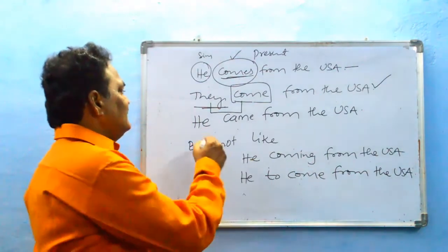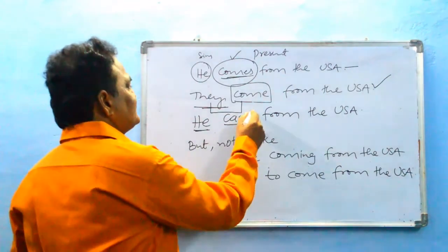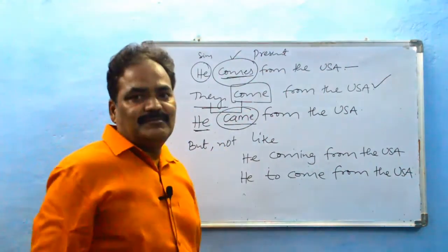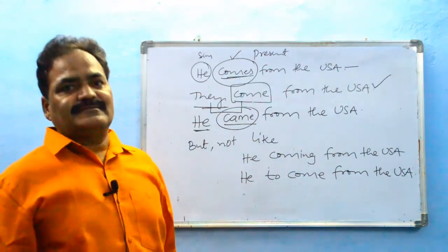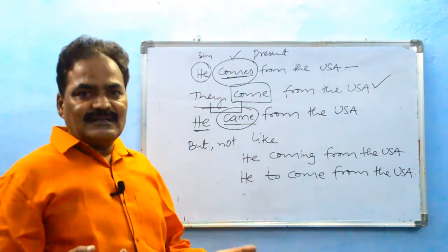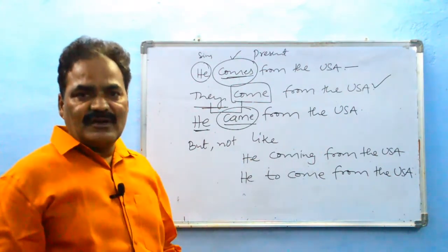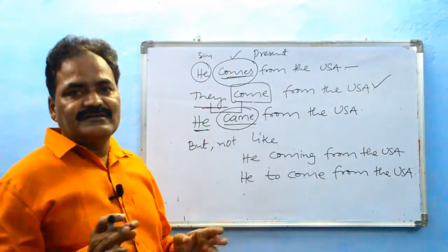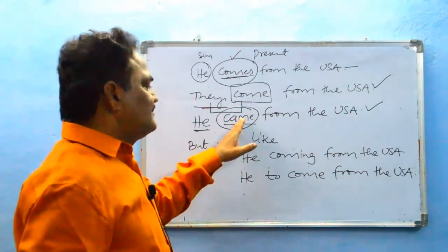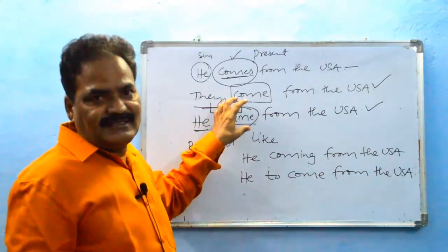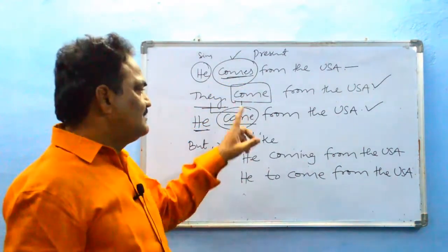In the third sentence, 'he came from the USA' — 'came' is a past form verb. Past form verb agrees with the subject — any subject, whether singular or plural. So this is a finite verb. 'Came' is finite, affected by tense and number.